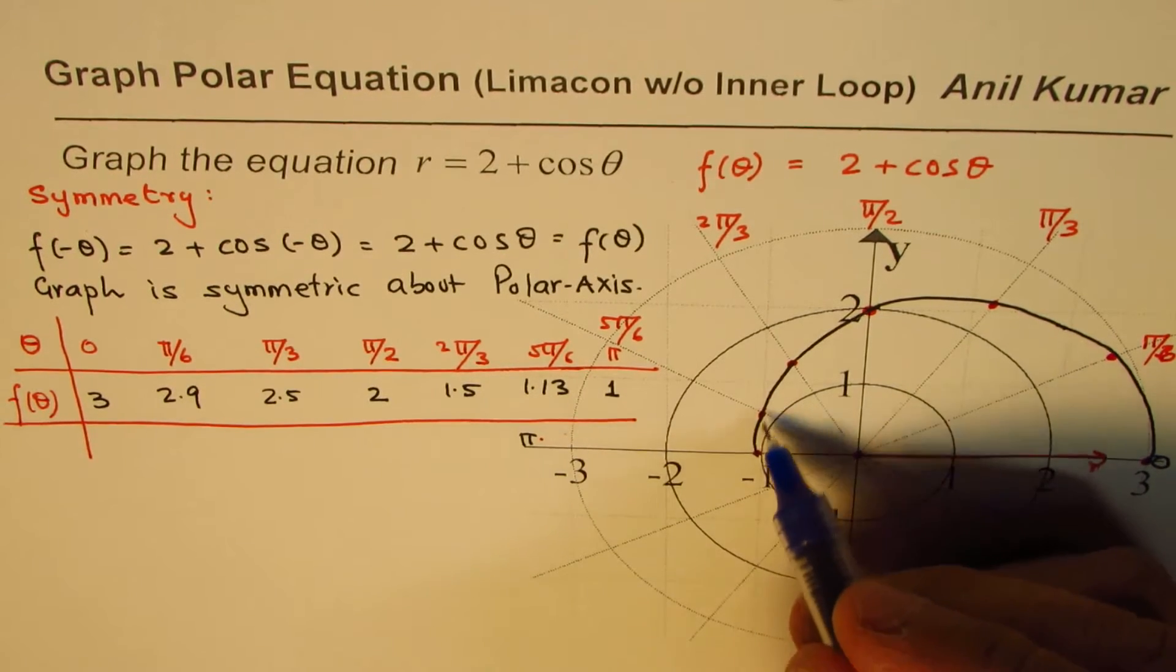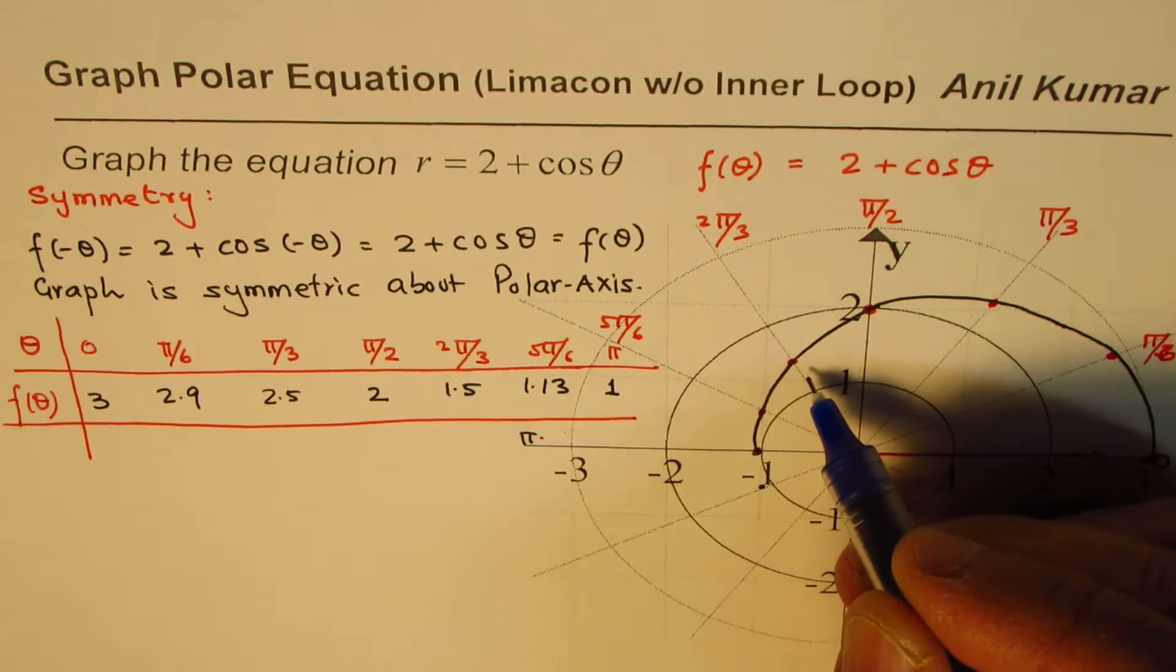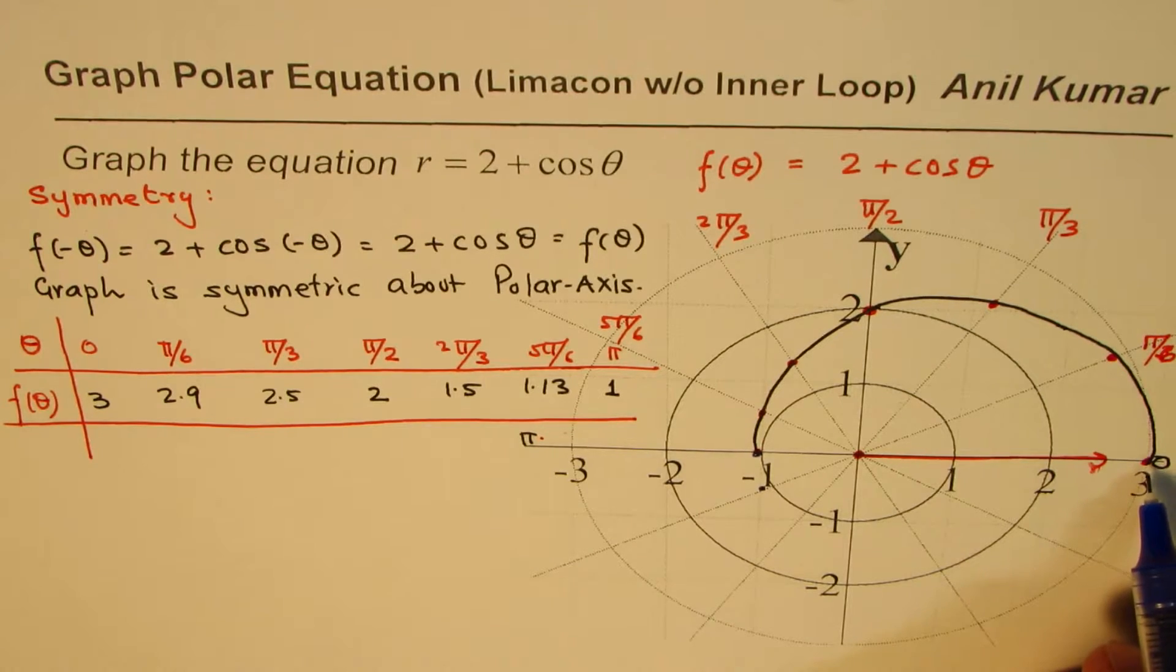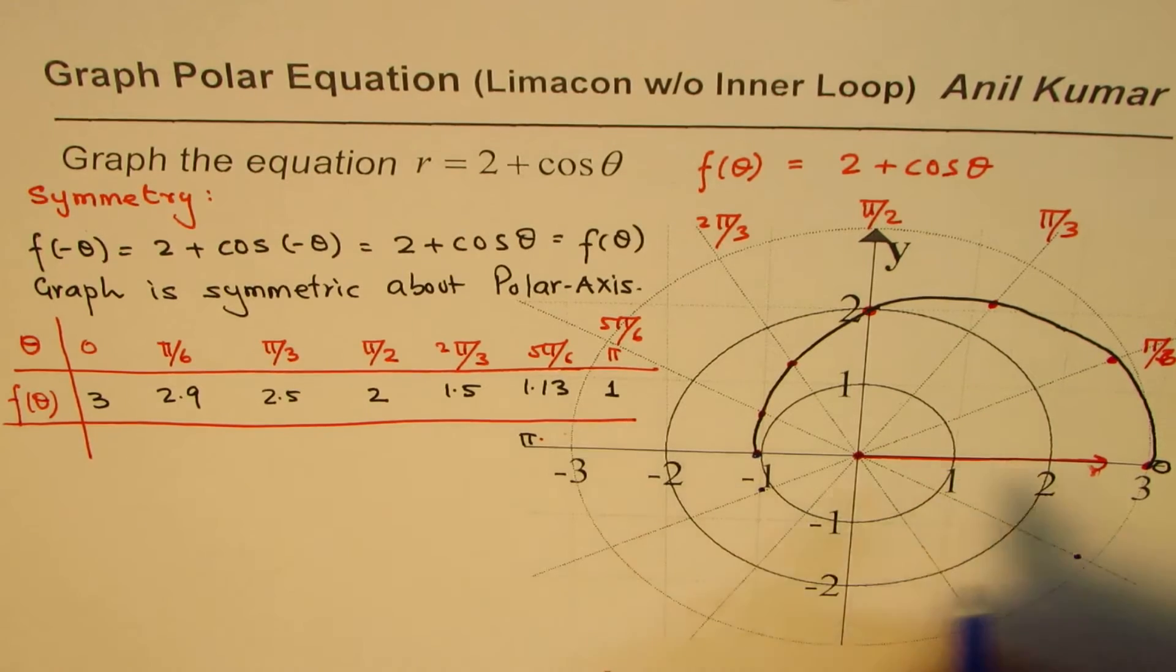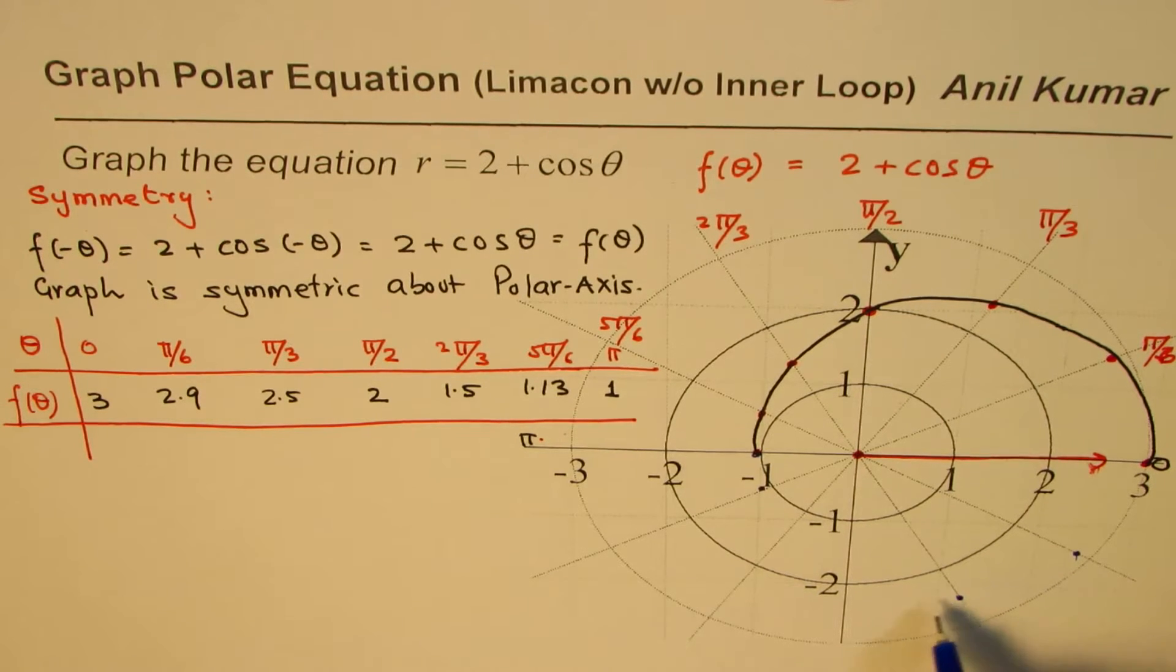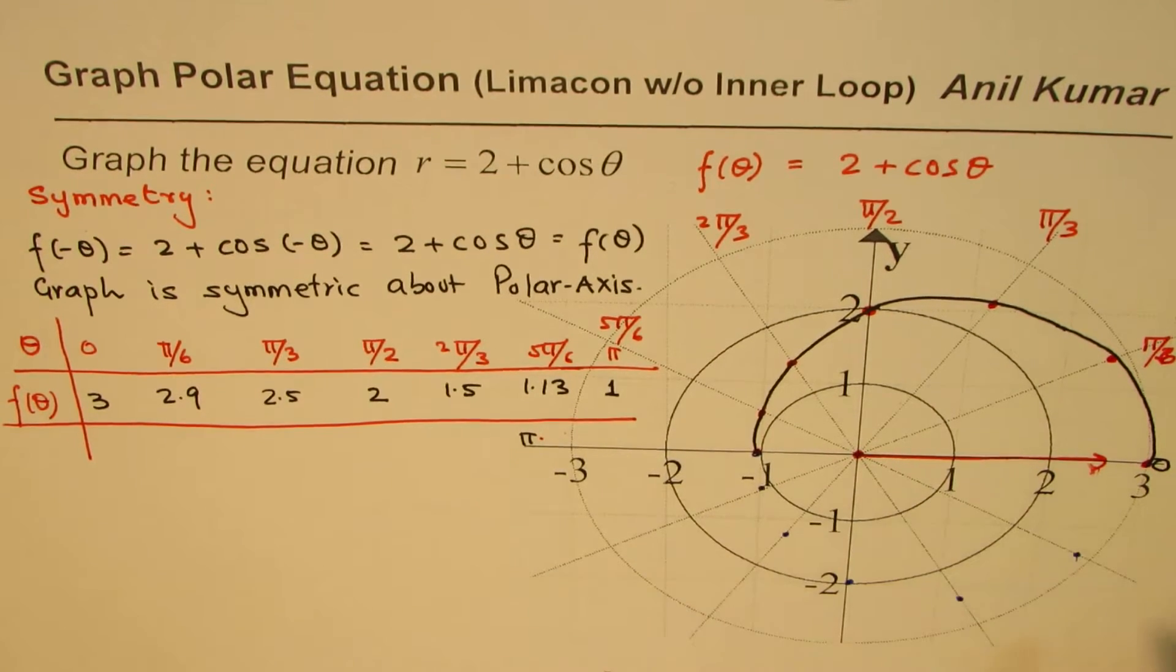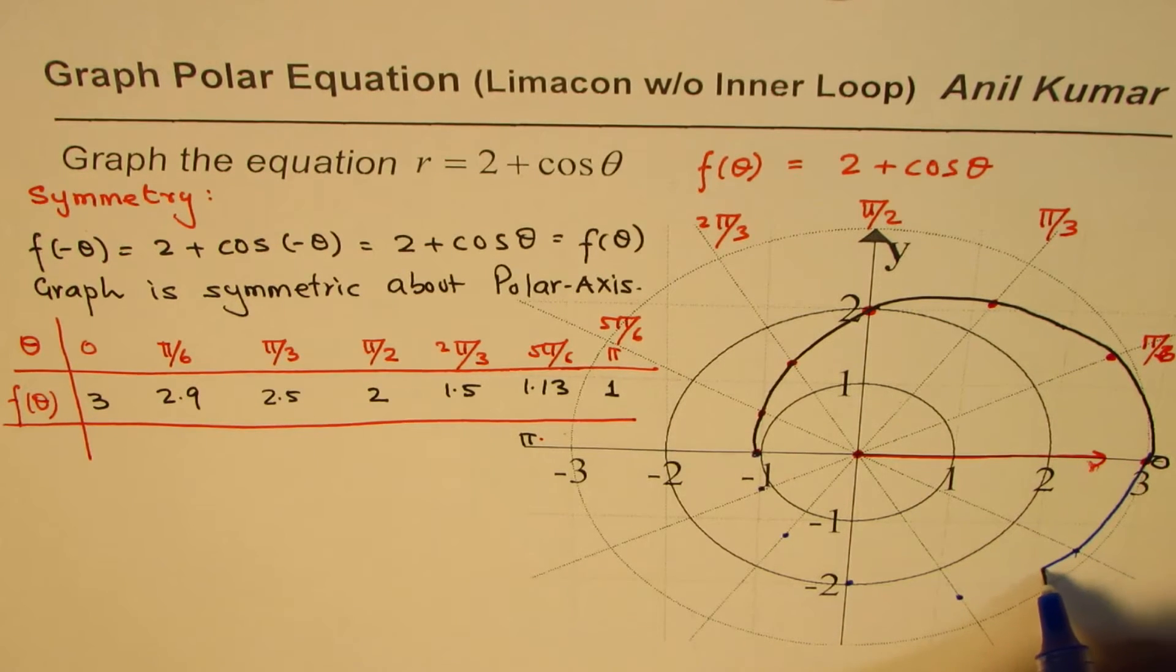Now we can find the other points which is reflect them. So we have slightly more than one here. Then on this line, 3, 2.9. So here we get 2.9 close. 2.5. So we are just reflecting them. We have 2.5 midway. And the next time we get 2. And then we get 1.5, between 1 and 2 here. And then we have this point. So we can join this.